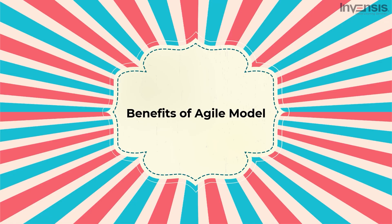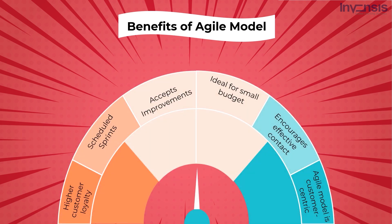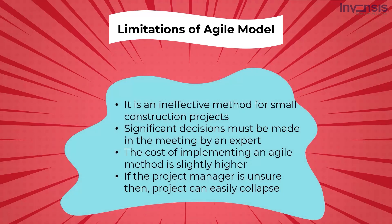Benefits of Agile methodology include: the software development life cycle can be completed more quickly, sprints with a predictable schedule, it is customer-centric leading to higher customer loyalty, openness to improvements, empowered teams, effective contact, and it is ideal for projects with a variable budget. Limitations of the Agile model include: ineffective for small construction projects, significant decisions must be made by an expert, the cost of implementing Agile is slightly higher, and if the project manager is unsure of desired outcomes the project can easily collapse.